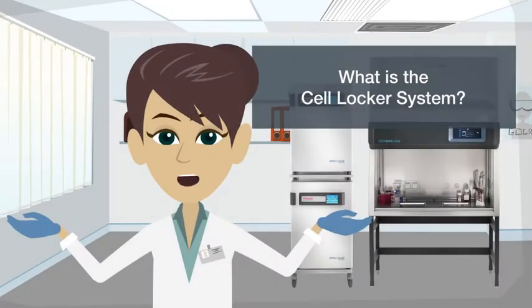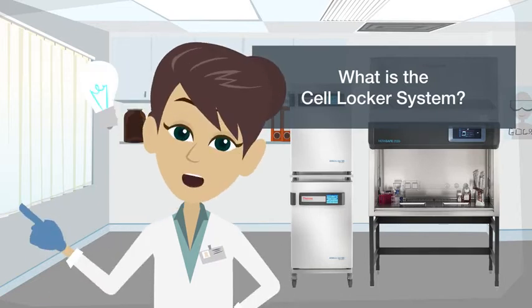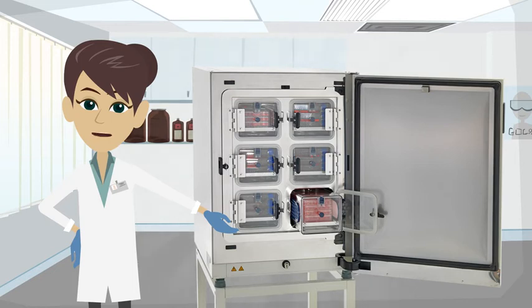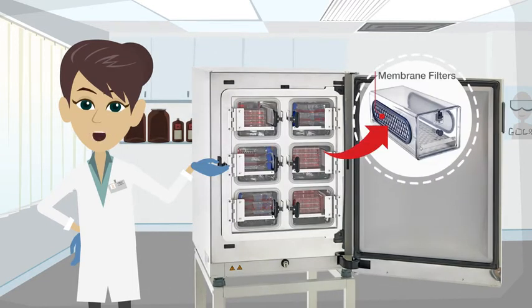What is the Cell Locker System? It is a breakthrough in cell culture management. The Cell Locker System consists of six individual polycarbonate chambers protected by membrane filters to segregate cultures.